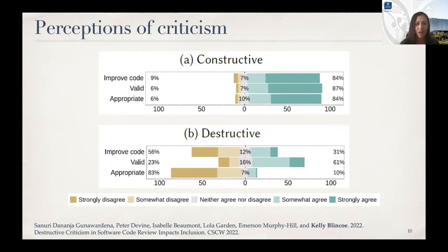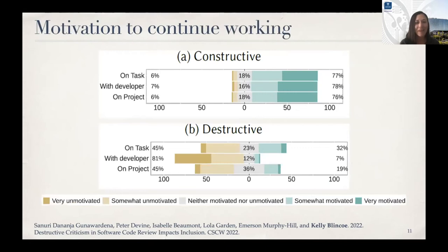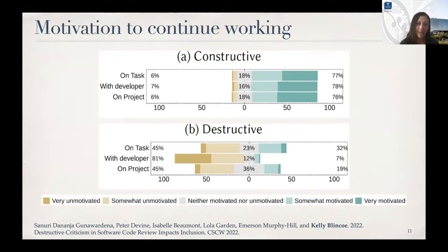For destructive feedback, participants strongly disagreed that it was appropriate. They also didn't think it would help them improve their code — even though they considered it valid feedback pointing out something wrong with the code. So it matters how you write your feedback — you need to be considerate, not just honest. For motivation, participants overwhelmingly agreed they would be motivated to continue working when receiving constructive criticism, but were unmotivated after destructive criticism — most strongly unmotivated to continue working with the developer who gave it.